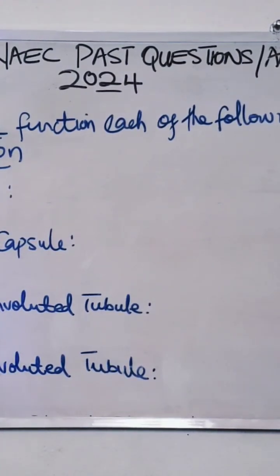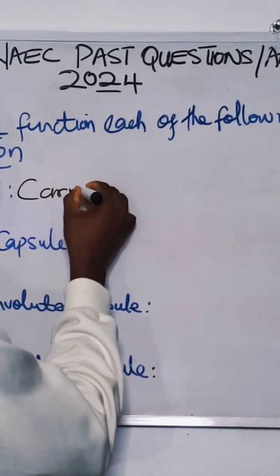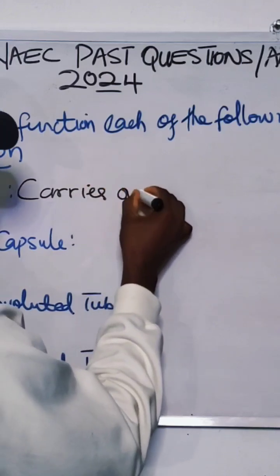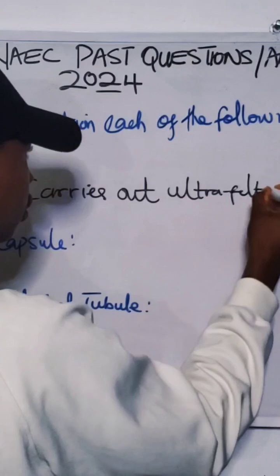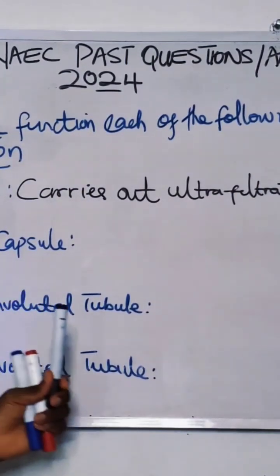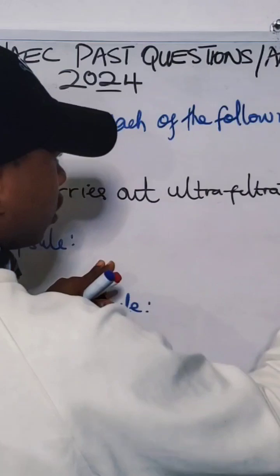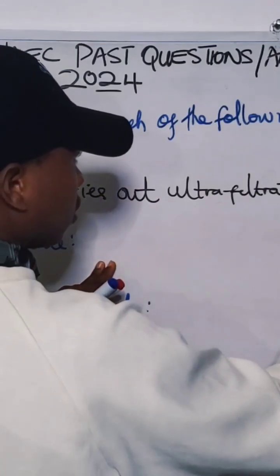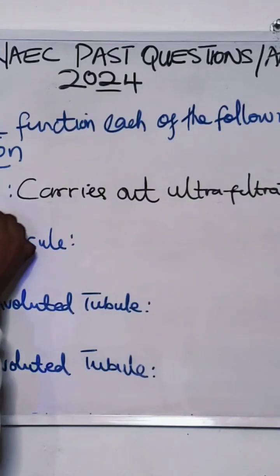The major function of the glomerulus is ultrafiltration — it carries out ultrafiltration. Or you can say it filters blood plasma.